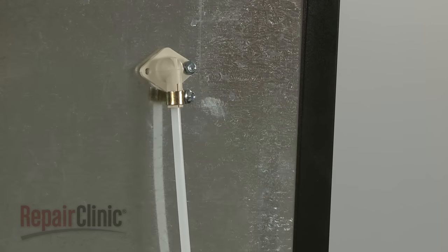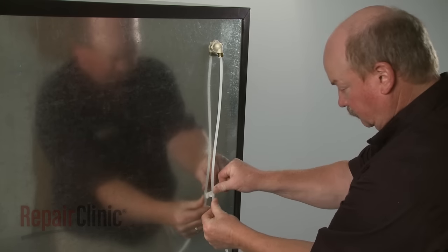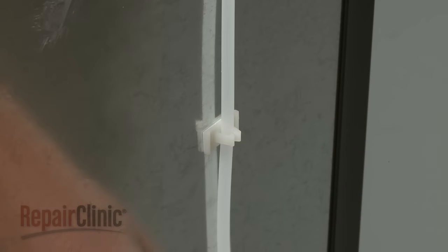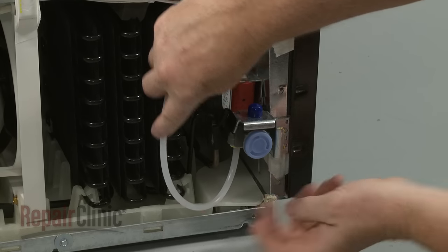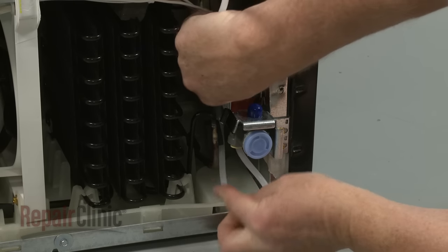With the tubing leading straight down from the fill tube, press the tubing into the two retaining clips. Any excess tubing should be looped below the water inlet valve and secured behind the retaining clip.